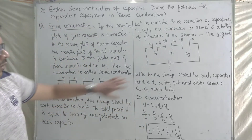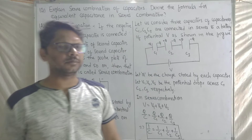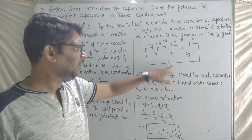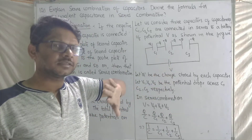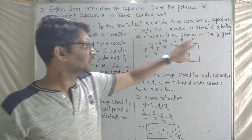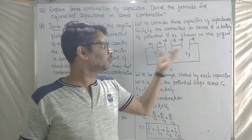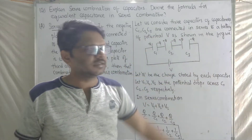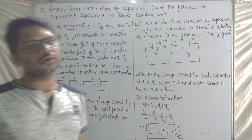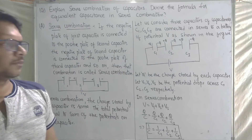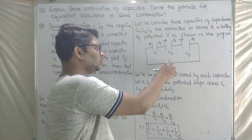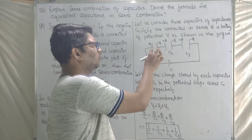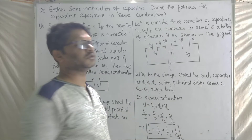This is the diagram. Here is a battery. This is C1 — three capacitors C1, C2, C3. The three capacitors are connected in series combination. Current flows and charge is stored.